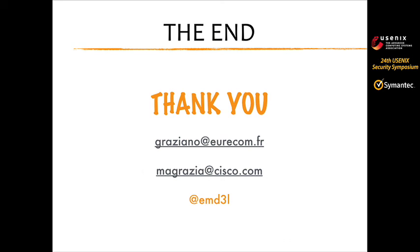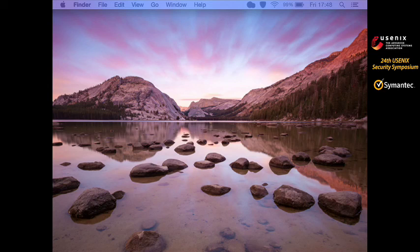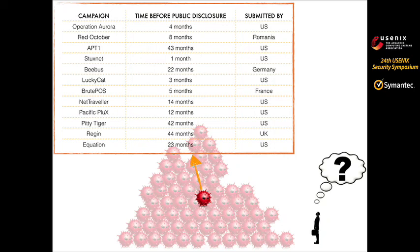We just know those samples are there when it's already too late — as seen in the first slide, we detect them really too late. For APT1, for example, it was 43 months — more than three years. But we don't have any development data for those cases.